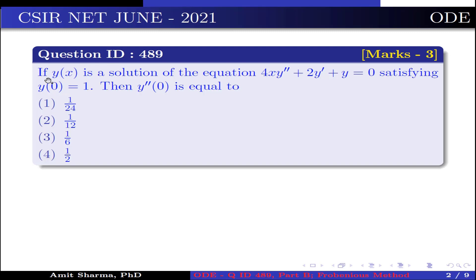The question is: if y(x) is a solution of the equation 4x·y'' + 2y' + y = 0, satisfying y(0) = 1, then y''(0) is equal to — option 1: 1/24, option 2: 1/12, option 3: 1/6, option 4: 1/2.